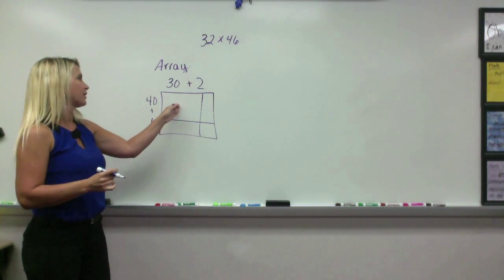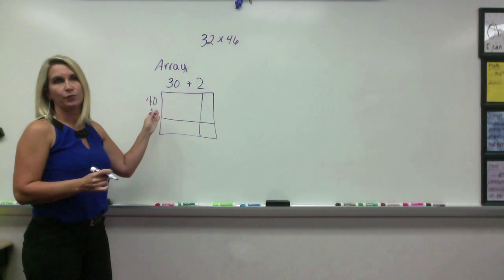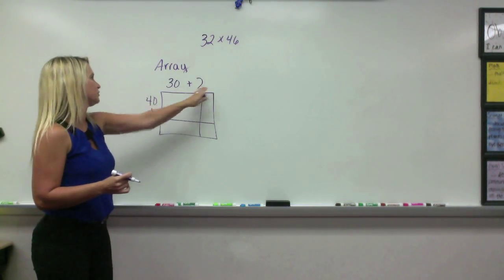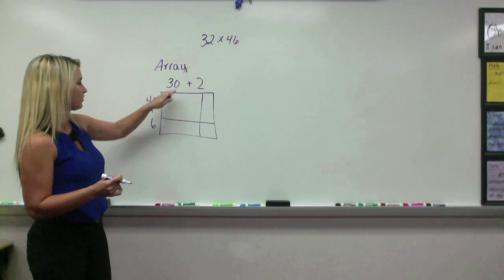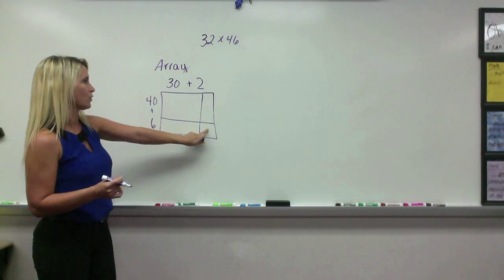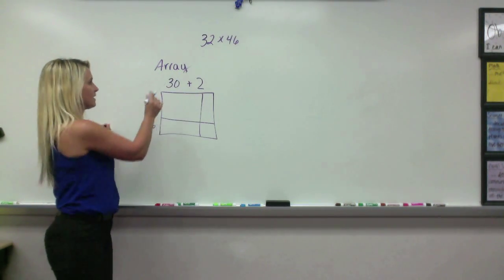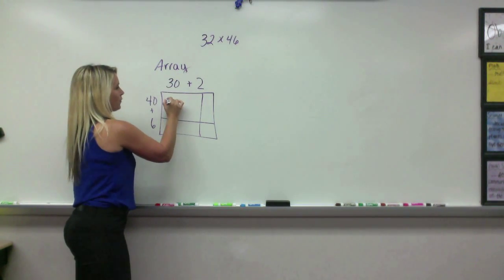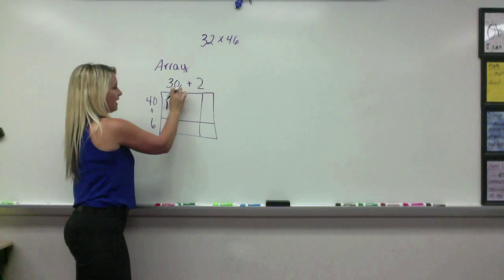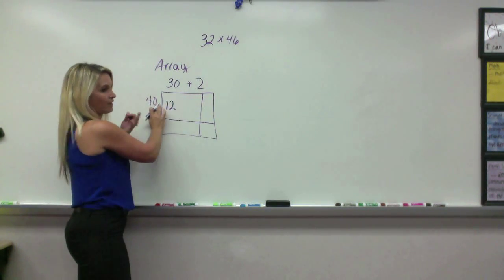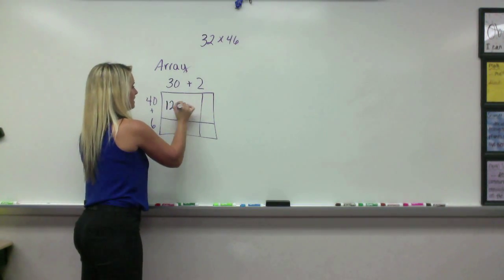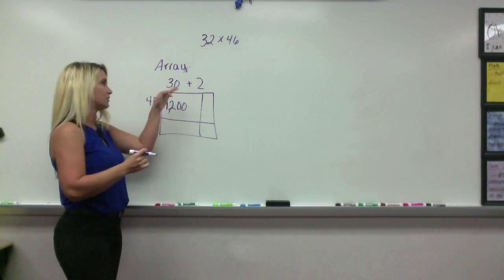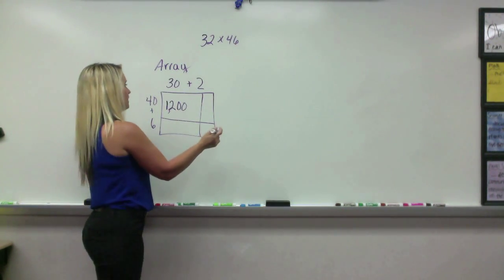So now this is the array for 30 times 40. This is the array of 2 times 40, and this one is 30 times 6, and this corner one is 2 times 6. So this 30 times 40 will be 3 times 4, which is 12, and then times 10 and times 10, which means times 100. The kids have learned the shortcut that you can count the zeros and add them, and then it still works out.